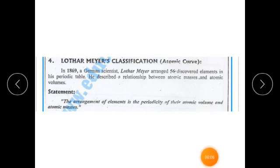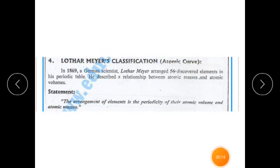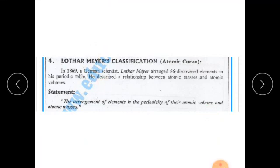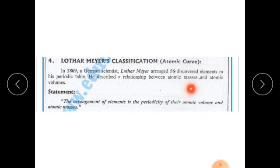We are going to continue our 4th chapter, Periodic Classification of Elements. The topic is Lothar Meyer's classification. In 1869, a German scientist Lothar Meyer arranged 53 discovered elements. He described the relationship between atomic masses and atomic volume. Basically, Lothar Meyer's classification is based on atomic mass and atomic volume.